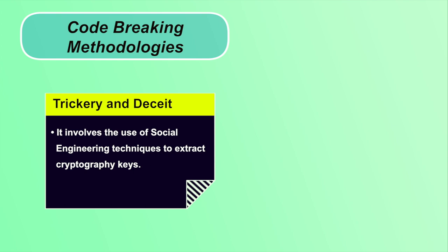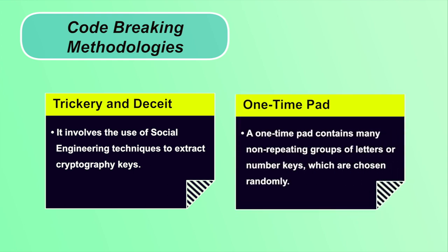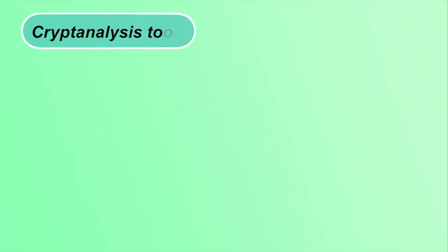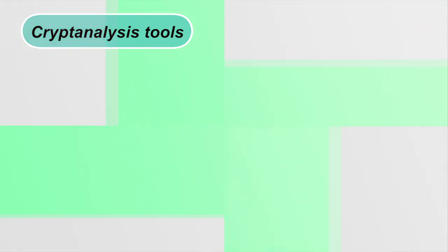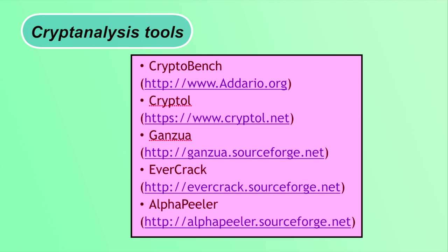For example, an attacker trying to get your email password might ask you questions to discover your pet name if that is your password. In one-time pad methodology, the attacker chooses randomly non-repeating groups of letters or number keys to get to the original message. Cryptanalysis tools that can decrypt encrypted messages without knowing the key include CryptoBench, Cryptol, Gansua, Evercrack, and AlphaPeeler. Links for downloading these software are given in the slide.